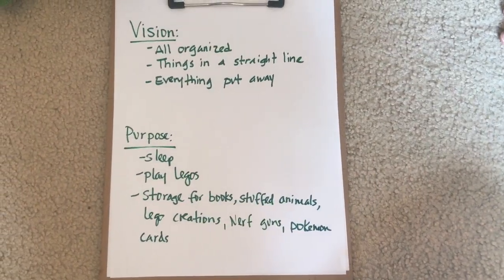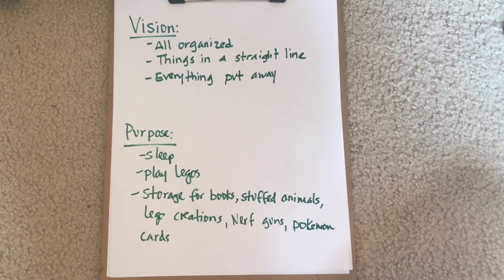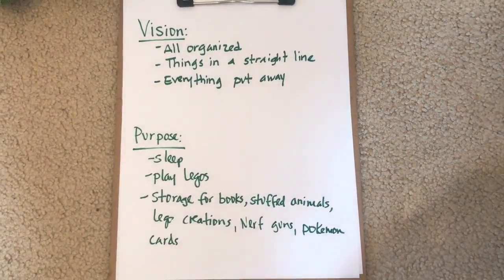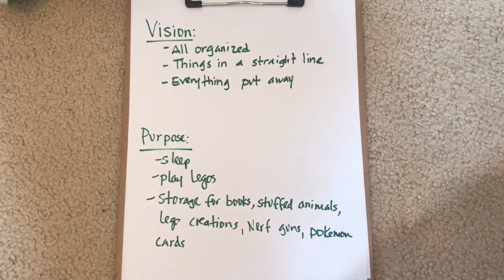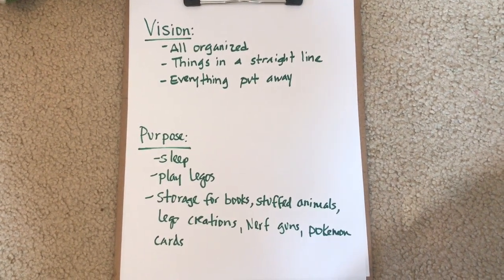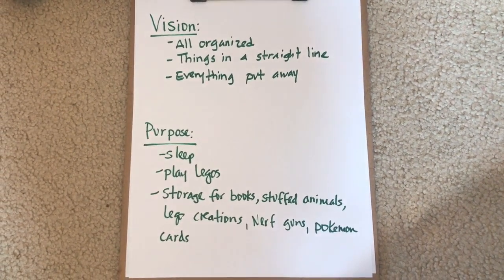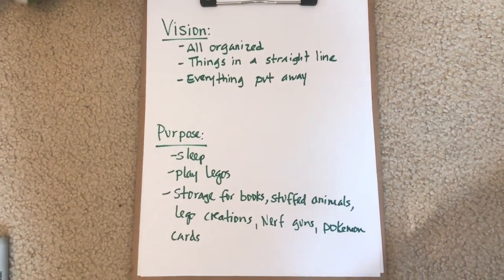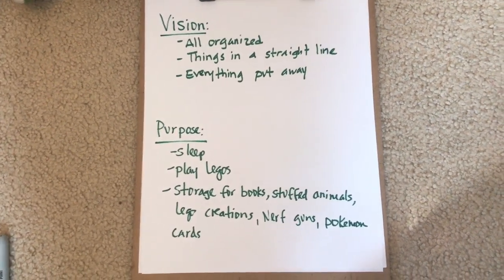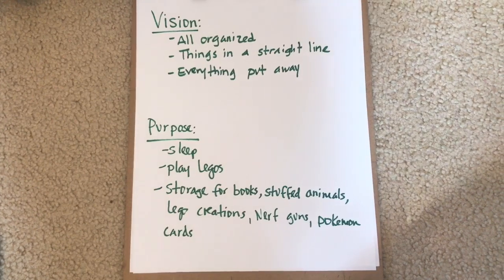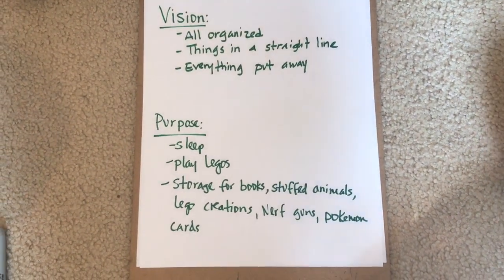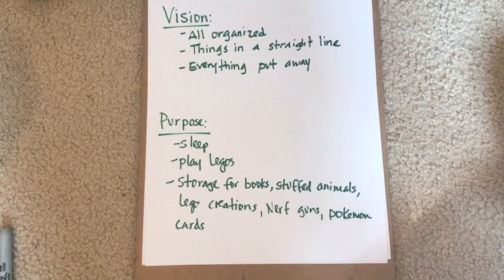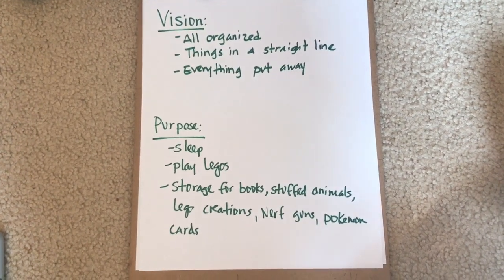The first step of the LAST method is to lay out your vision and purpose. I asked the boys what their vision of their perfect room would look like and the purpose of the room. They said their vision is that everything is organized, things are in a straight line, everything's put away — as opposed to being shoved under the bed. The purpose of the room is they sleep in here, they play Legos, and it's storage for books, stuffed animals, Lego creations, Nerf guns, and Pokémon cards.